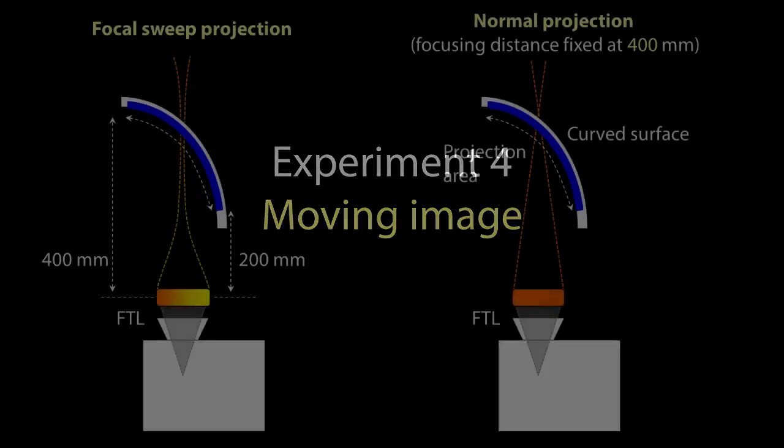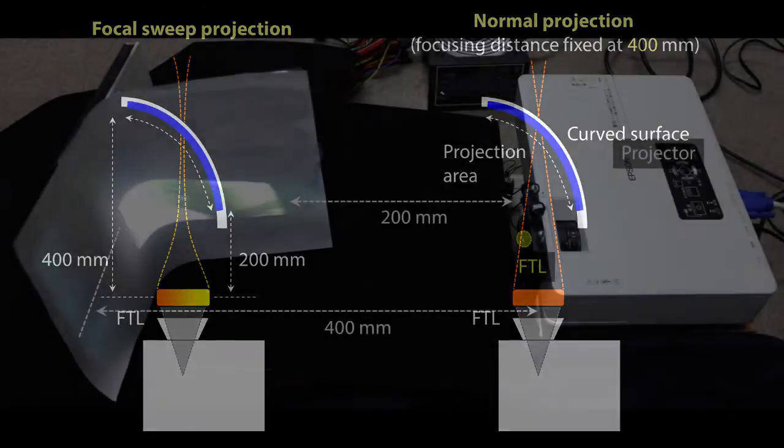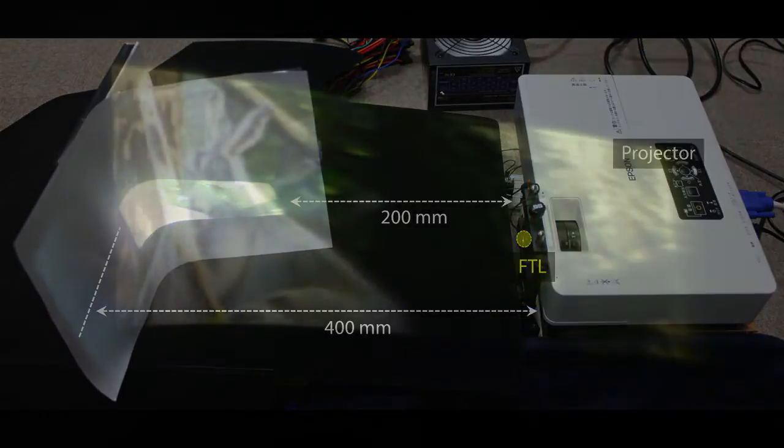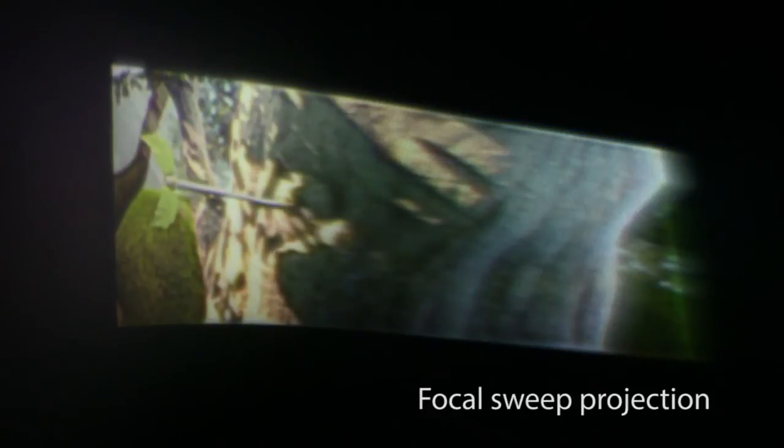The proposed method can be applied for moving images. Here, we show a moving image projected onto a curved surface. From the results, we confirmed that the proposed focal sweep projection method provided better focused moving image than normal projection.